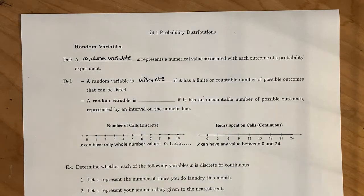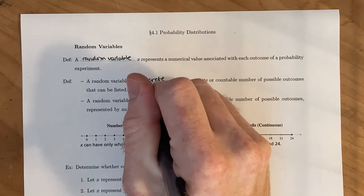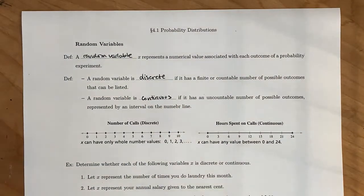So there's a first, a second, a third, a fourth, and so on. Then the other type of random variable we'll look at is what is called a continuous random variable. And that's if it has an uncountable number of possible outcomes represented by an interval on the number line.